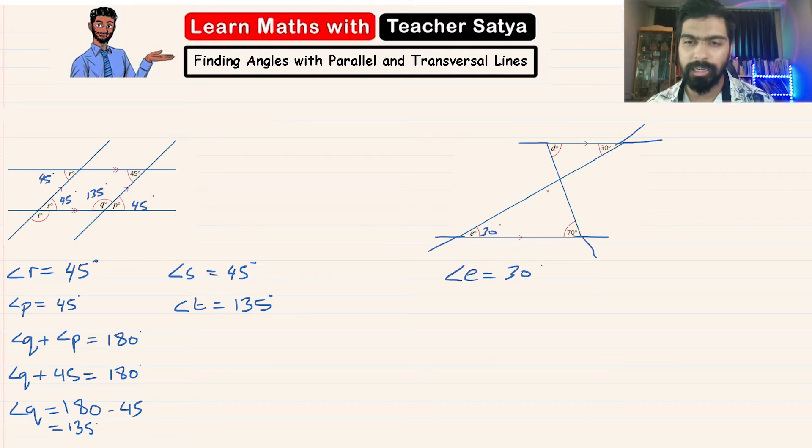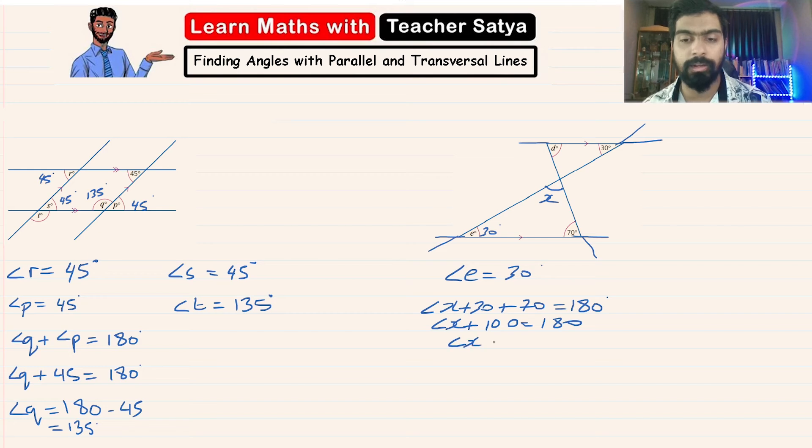Now once we find angle E, we can immediately find this angle. Or you can also use the alternate angle to find angle D straight away. But let me use two different methods so that you can understand it in two different ways. So let me call this angle X. Angle X plus 30 plus 70 equals 180 degrees. So angle X plus 100 equals 180, therefore angle X equals 80 degrees. So this is equal to 80 degrees.